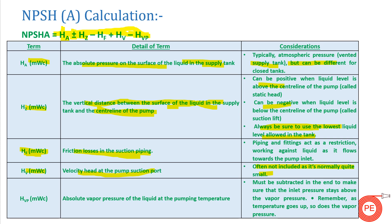The next and most important term is minus HVP — the absolute vapor pressure of the liquid at the pumping temperature. When HVP comes into picture, we know that if the pressure of water falls below its vapor pressure, the water starts boiling. If a pump is pumping water at 20°C, the vapor pressure will be different than if it is pumping water at 100°C, because HVP is a subtracting term from the other values.